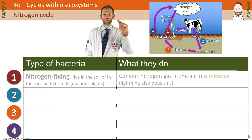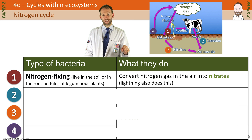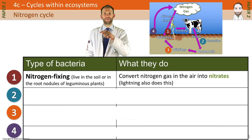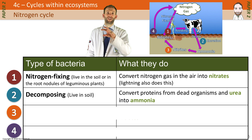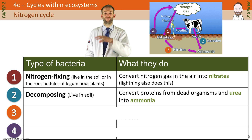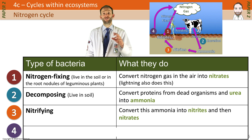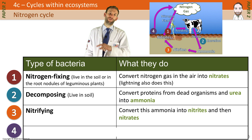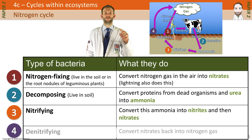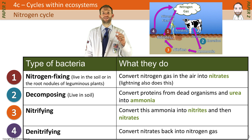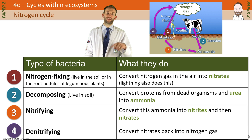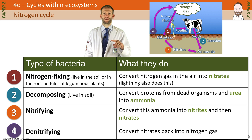We've got the decomposing bacteria that convert the nitrates in dead organisms into ammonia in the soil. We've got nitrifying bacteria that can then take that ammonia back to the useful nitrates. And then we also have denitrifying bacteria that can convert excess nitrates in the soil back into nitrogen gas in the atmosphere.